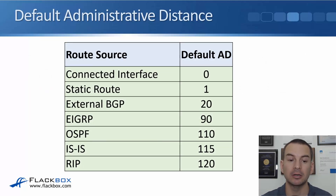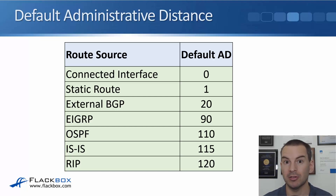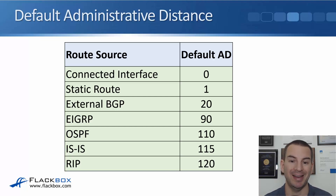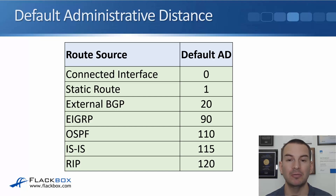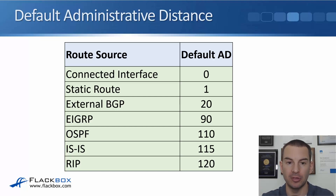This slide shows the default AD values of our popular routing protocols. Worst is RIP with a value of 120. Then ISIS at 115. OSPF has an AD of 110. EIGRP is the most preferred of our IGPs with an AD of 90. External BGP has 20. A static route has a default AD of 1. And connected interfaces will always be preferred — they have an AD of 0.